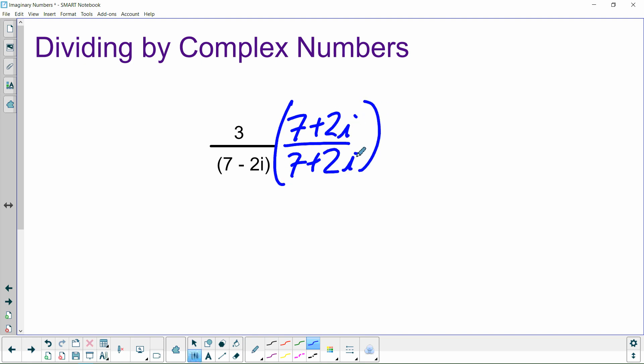You see, anything divided by itself is 1. So, I'm multiplying by 1, so I'm not changing the value. But it'll work out. So, distribute our 3. So, 3 times 7 is 21, I hope. Plus, 3 times 2 is 6. Bring our i along. And then on the bottom, 7 times 7 is 48. 7 times 2i is... Sorry, I lied. Wait, no, it's not, Mr. Barton. 7 times 2i is 49. Okay. 7 times 2i is 14i. Negative 2i times 7 is negative 14i. And then negative 2i times 2i is negative 4i squared.